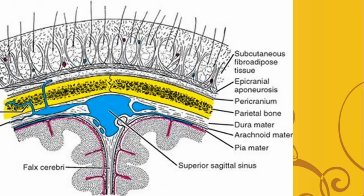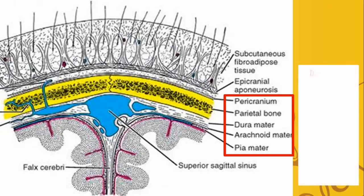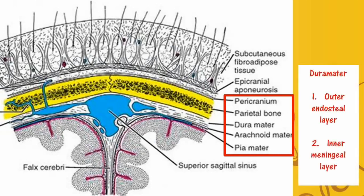Just focus on the marked markings. The inner periosteum of the skull bones is made by the outer endosteal layer of the dura mater. The cranial dura mater has two layers: the outer one is the endosteal and the inner layer is the meningeal layer. And along the lines of separation of these two layers lies the dural venous sinuses.